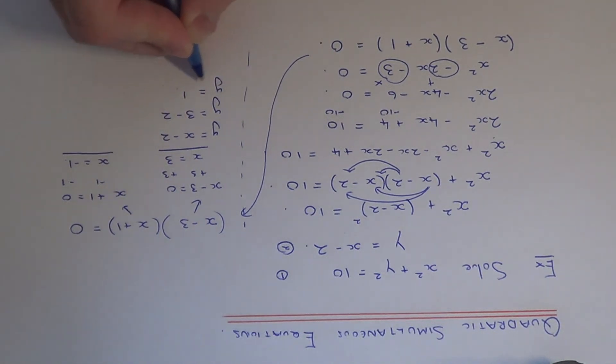So this will be 3 take away 2. 3 take away 2 is 1. So our first solution is 3, 1.